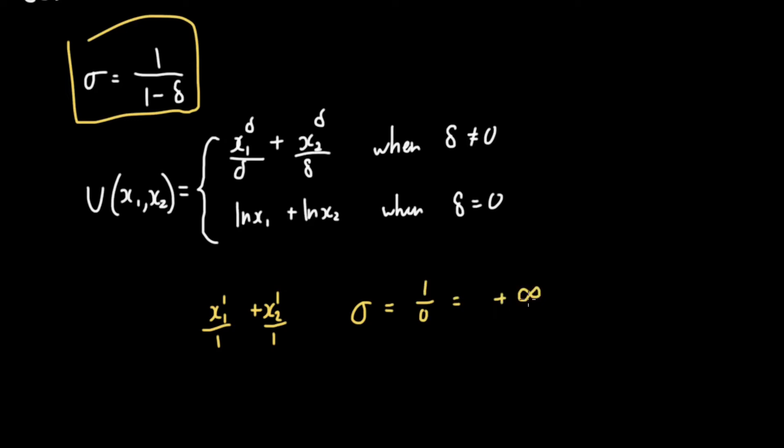In the case of the Cobb-Douglas, delta is 0. And it may not be obvious but delta is negative infinity in the case of perfect complements. And again our elasticity in the case of perfect complements is equal to 1 over 1 minus negative infinity, and so this would be equal to 1 over 1 plus infinity, which is equal to 1 over infinity, which equals 0.